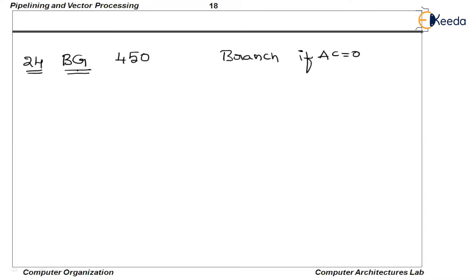Generally, after this instruction, we know that the 25th instruction is needed to be executed. But in this case, this is a branch instruction. That means if the condition in the branch is evaluated and the condition gets satisfied, we will be branching to 450. We will branch to 450 if the accumulator is equal to 0. If the accumulator is not equal to 0, we don't take this branch. So there is no way we can predict what the next instruction will be unless the branch instruction is completely executed.